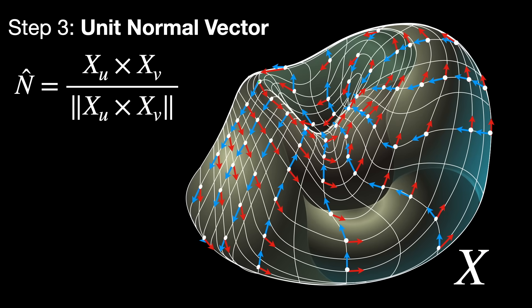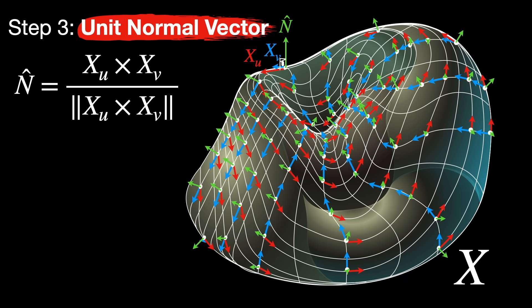Step 3. Unit normal vector. Calculate the normal vector by taking the cross product of the tangent vectors and then normalize, so that it has magnitude 1. This is called the unit normal to the surface at each point.